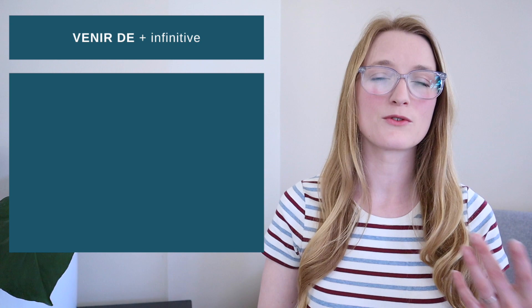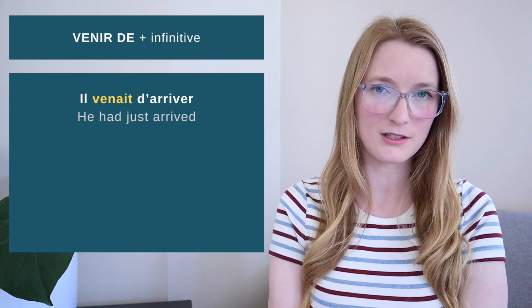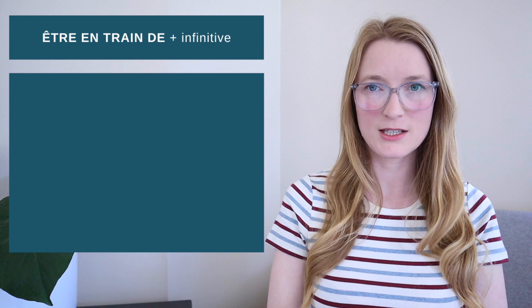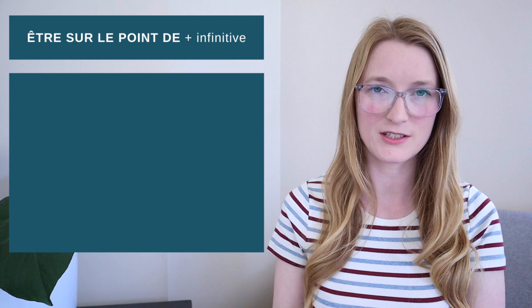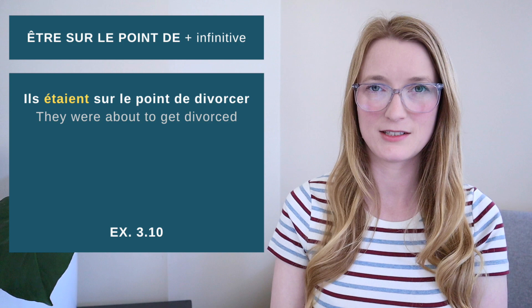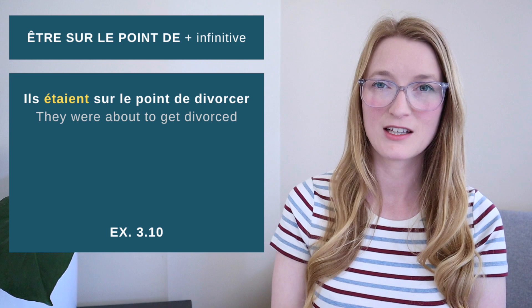'Venir de' is the recent past — meaning 'to have just.' For example: 'Il venait d'arriver' — he had just arrived. Then we have 'être en train de,' meaning to be in the process of doing something: 'Nous étions en train d'étudier' — we were studying, or more literally, we were in the process of studying. Another construction is 'être sur le point de' plus infinitive, meaning 'to be about to': 'Ils étaient sur le point de divorcer' — they were about to get divorced.